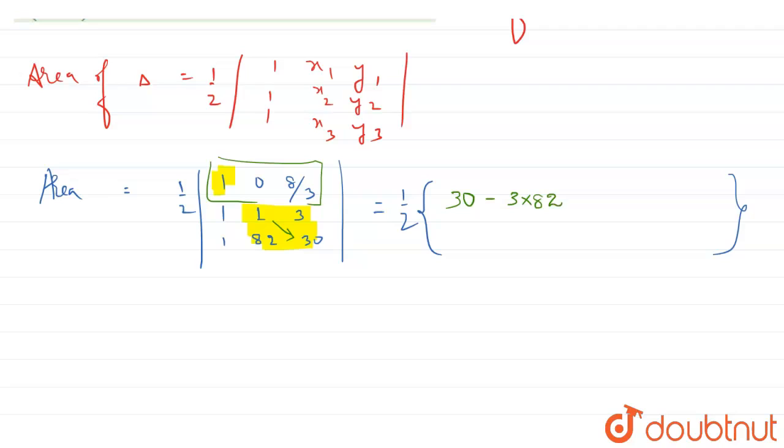And then we will have minus 0, and then plus 8/3 into—again exclude that particular row and that particular column—we will have the determinant, a 2 by 2. So 1 into 82 minus 1 into 1.